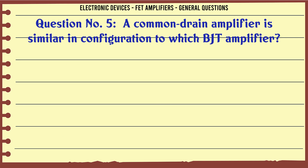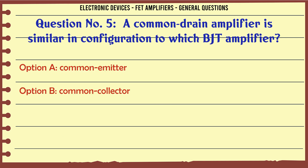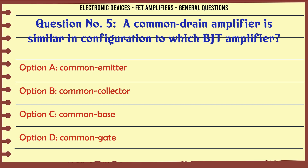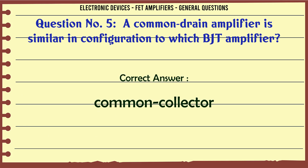A common drain amplifier is similar in configuration to which BJT amplifier? A. Common Emitter. B. Common Collector. C. Common Base. D. Common Gate. The correct answer is Common Collector.